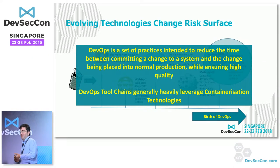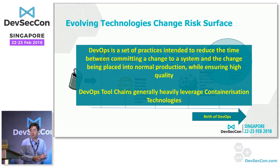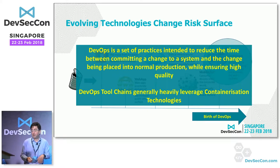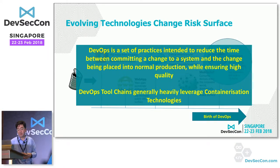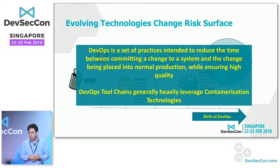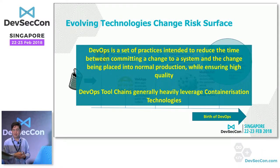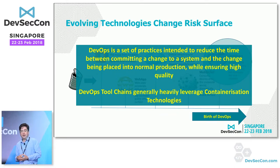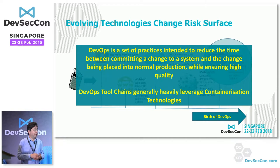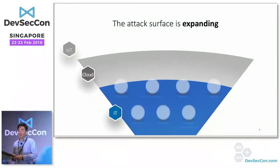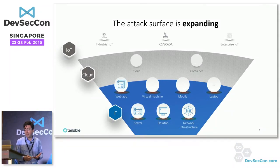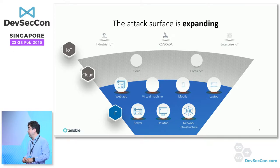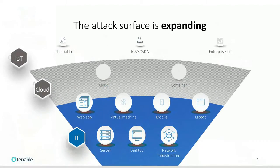DevOps is really a methodology intended to reduce the time from a design change being committed to it becoming available. The integration of development and operations has made this possible. DevOps tool chains lean heavily toward a containerized implementation — Tenable's own latest technology, Tenable.io, is fully implemented using containerization. Looking at the attack surface, containerization has a significant impact on the threat surface.